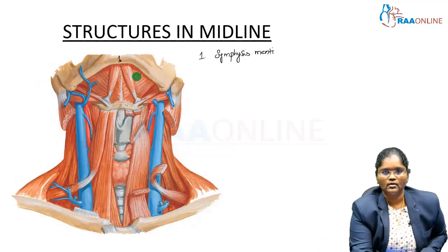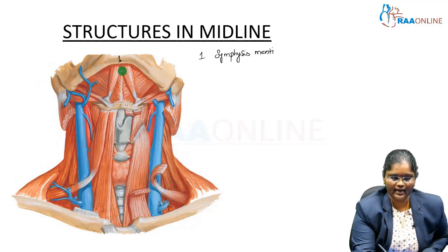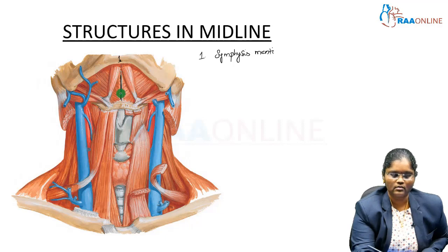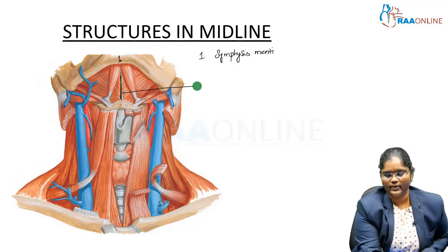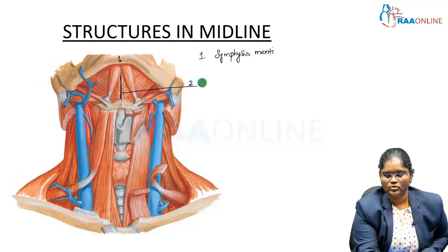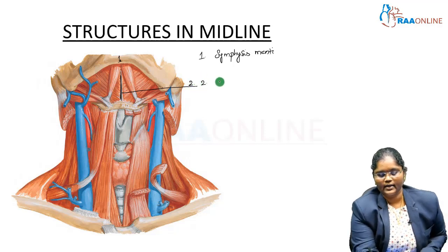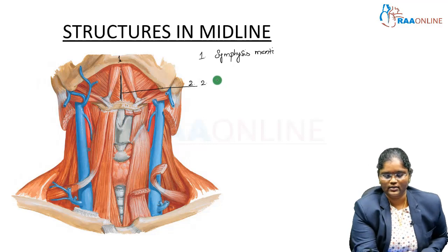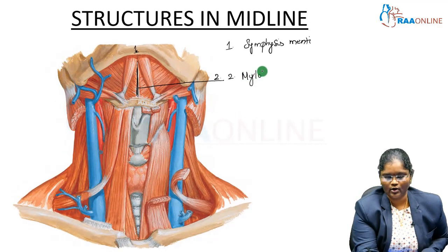Next is the fibrous median raphe. You can see a white line in the middle — it is the meeting point of the mylohyoid muscle on either side. This is the tendon of the mylohyoid muscle.